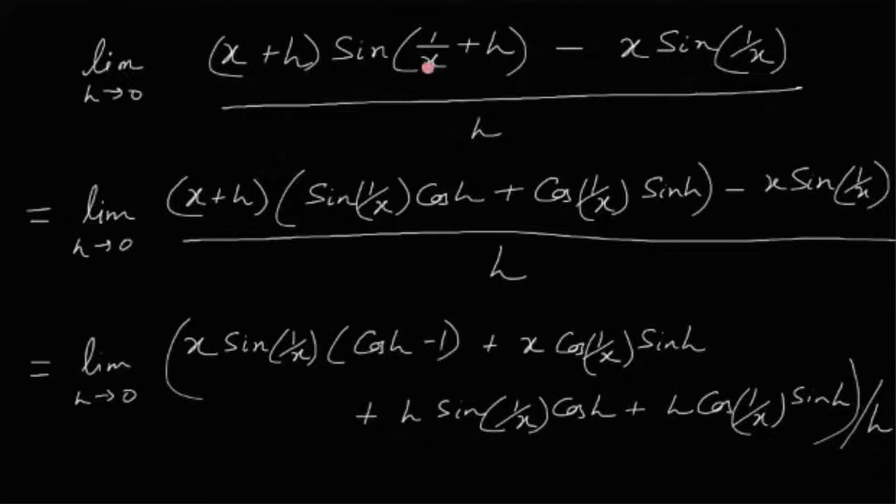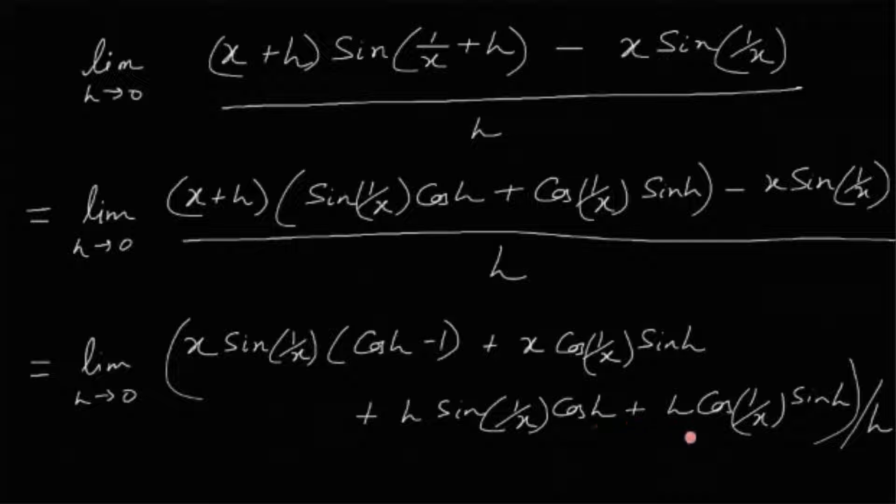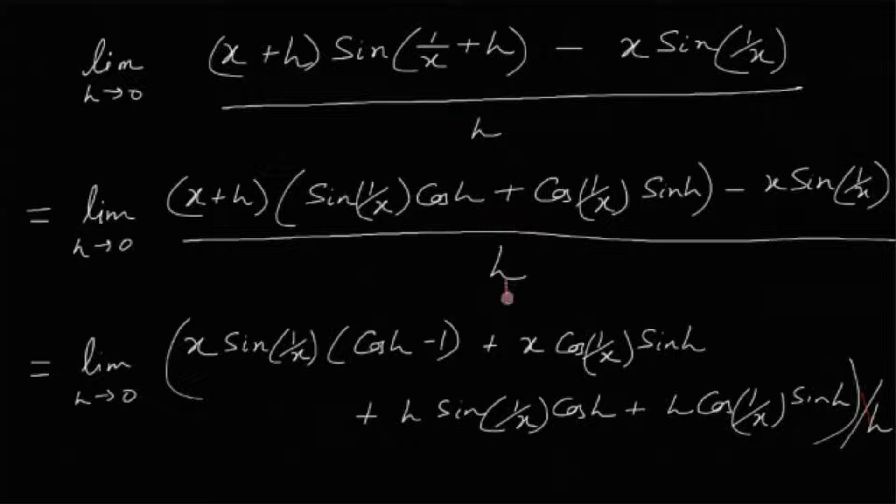Now breaking down this sin(1/(x+h)) term simply as sin(a+b) we get sin(1/x)cos(h) plus cos(1/x)sin(h) and remaining terms are just the same. Then adjusting it we get x sin(1/x)(cos(h)-1) plus x cos(1/x)sin(h) plus h sin(1/x)cos(h) plus h cos(1/x)sin(h) whole divided by h. Remember h is in the denominator.